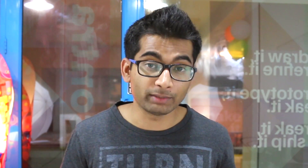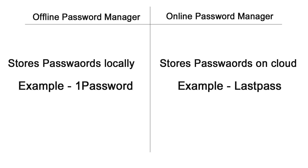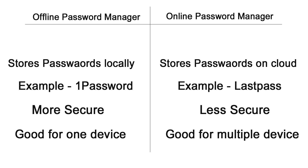Basically, there are two types of password managers: an offline password manager and an online password manager. The difference between both of them is that the offline password manager stores all your passwords on the local machine, like 1Password, while the online password manager stores all your passwords on a remote server, like LastPass. Although both store your passwords in an encrypted format, the security is greater with the offline password manager since the data is not leaving your computer. But if you own multiple devices like I do, then online password managers make more sense.